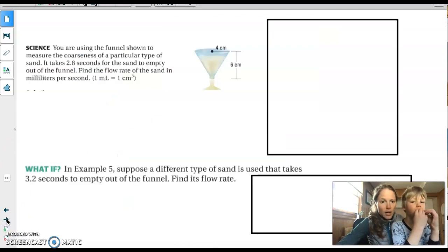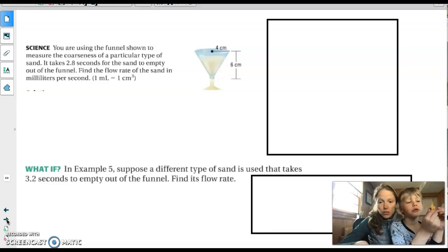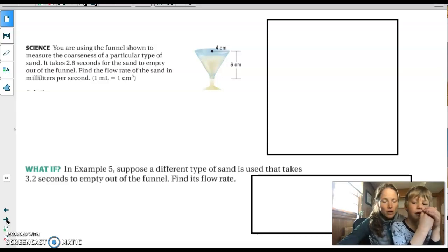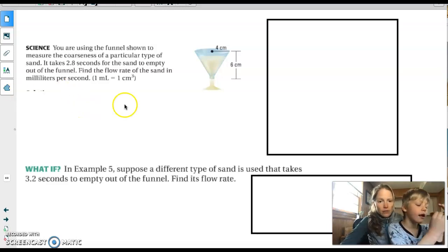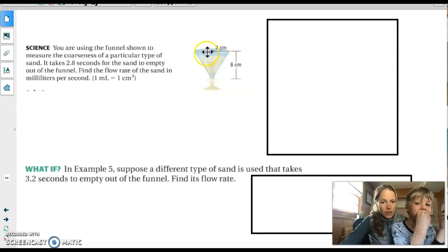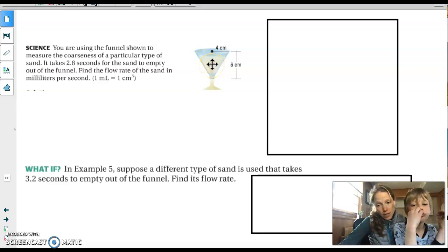All right, last two here. These ones sort of take this same idea of finding volume of a cone and add an application to it. So thinking about a rate of something coming out of a funnel. And so here, again, they give you the dimensions of the funnel. They tell you the radius and the height so you can find the volume. And then they're asking you, if this was full of sand, how long would it take for the sand or what would be the rate of change of the sand coming out of this funnel if you know it takes 2.8 seconds for all of the sand to be out of the funnel. So take a minute and try that one.